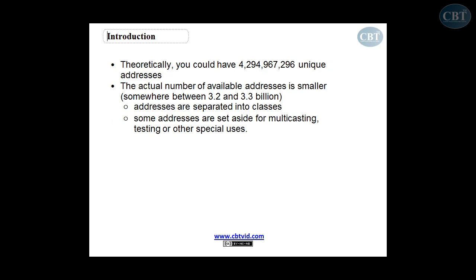For a computer to communicate with other computers and web servers on the internet, it must have an IP address — much like the telephone network, where everyone has a unique phone number. When IP addressing first came out, everyone thought there were more than enough addresses to cover any need. You could have around four billion unique addresses, though the actual number is closer to three billion since some are reserved for multicasting or scientific purposes.